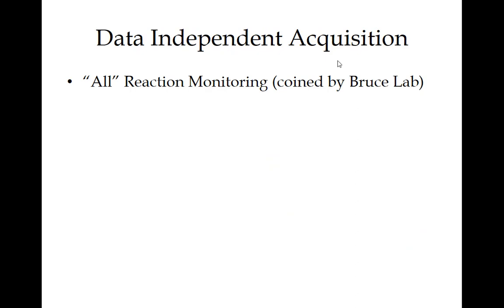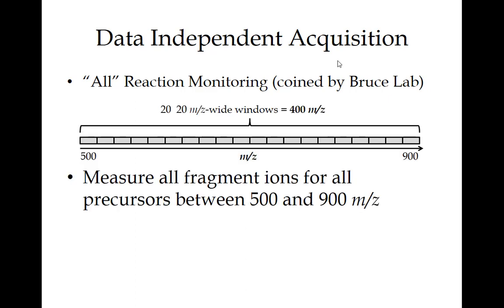I like to think of DIA as all reaction monitoring — a term coined by the Bruce lab early on — because it makes people immediately think about it in the context of selected reaction monitoring or PRM. Here's an example of a DIA approach, one of the early ones we would do in our lab: you simply acquire a cycle of MS/MS windows covering 500 to 900 m/z comprehensively. The key is that this cycle of MS/MS windows covers the entire range, so you're not missing any precursors — it's a non-stochastic acquisition approach.